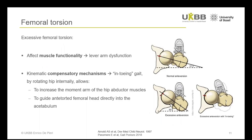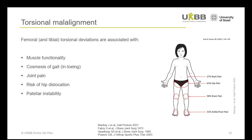Excessive femoral torsion can affect muscle functionality by reducing the lever arm of hip abductors during gait — this is referred to as lever arm dysfunction — which in turn can lead to kinematic compensatory mechanisms such as an in-toe gait pattern. By internally rotating the hip and the overall leg, the moment arms of the hip abductor muscles are increased or restored to more normal values. Torsional malalignment is also associated with joint pain at several levels, increased risk for hip dislocation, and recurrent patellar instabilities — so this is not just a functional and cosmetic issue, but also a problem of altered joint loading.